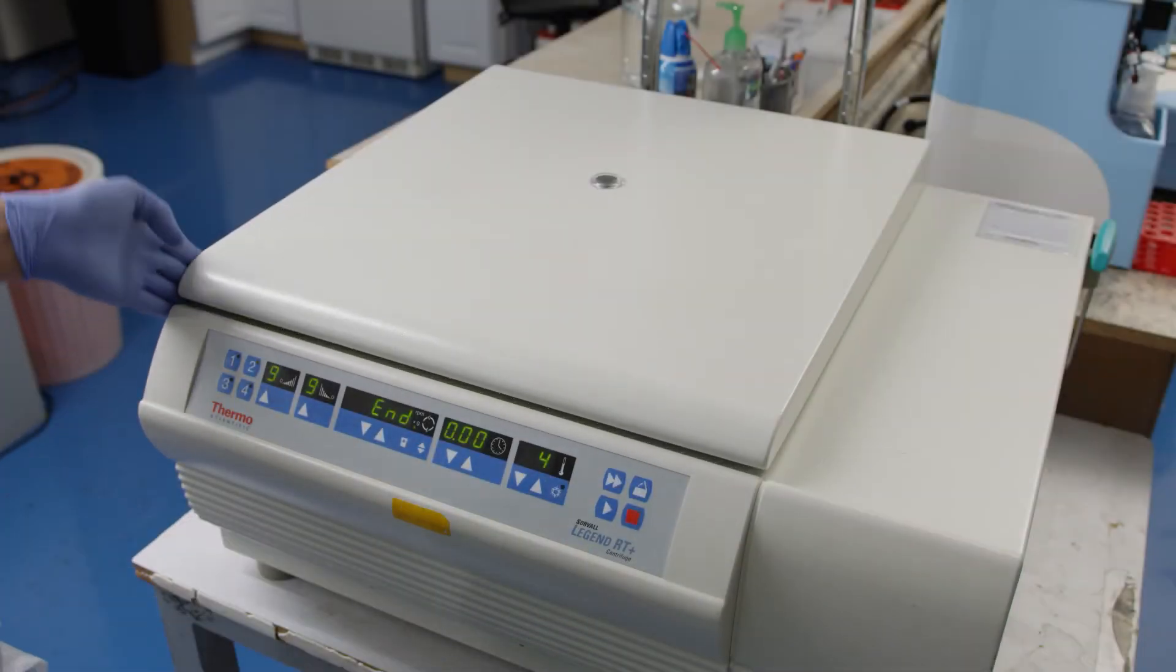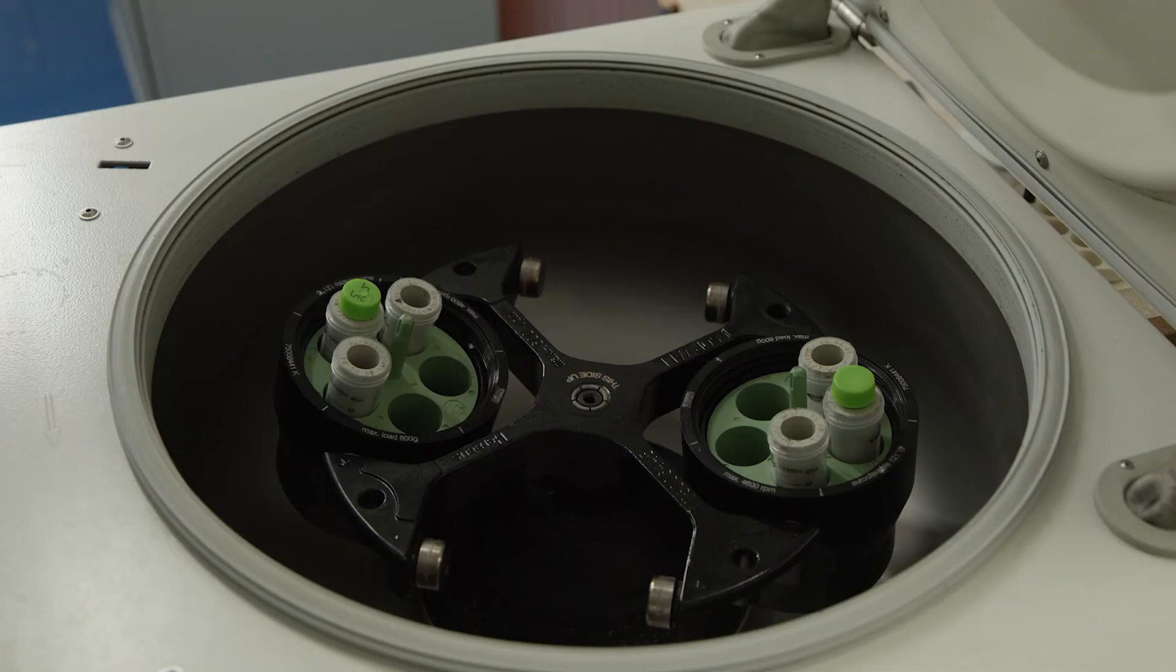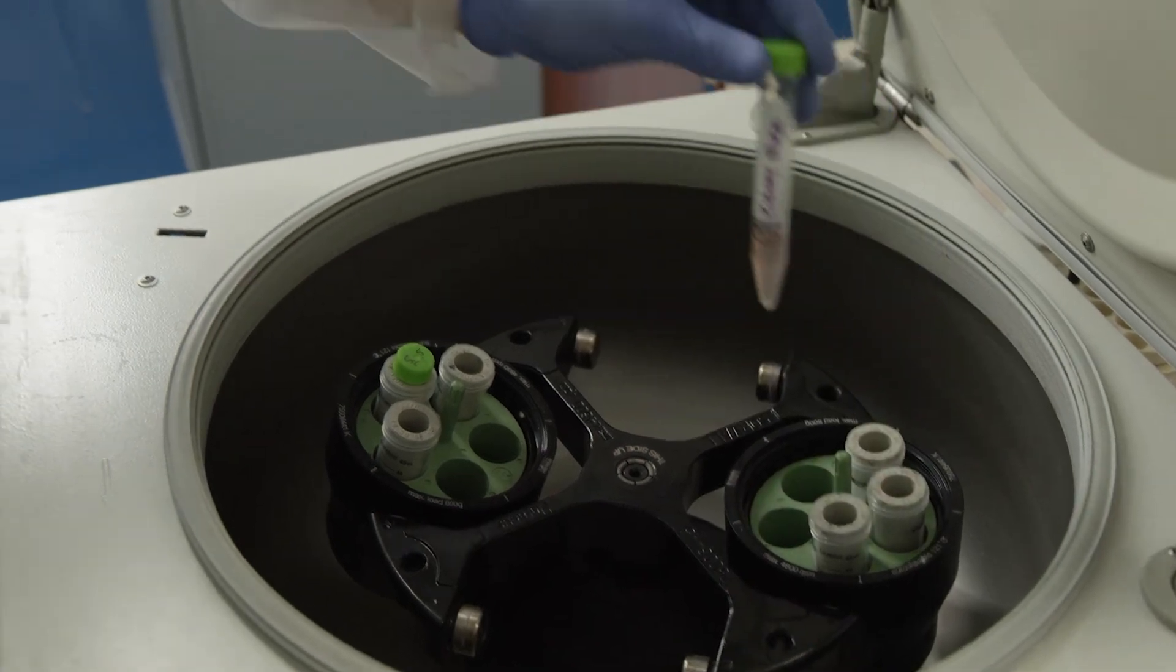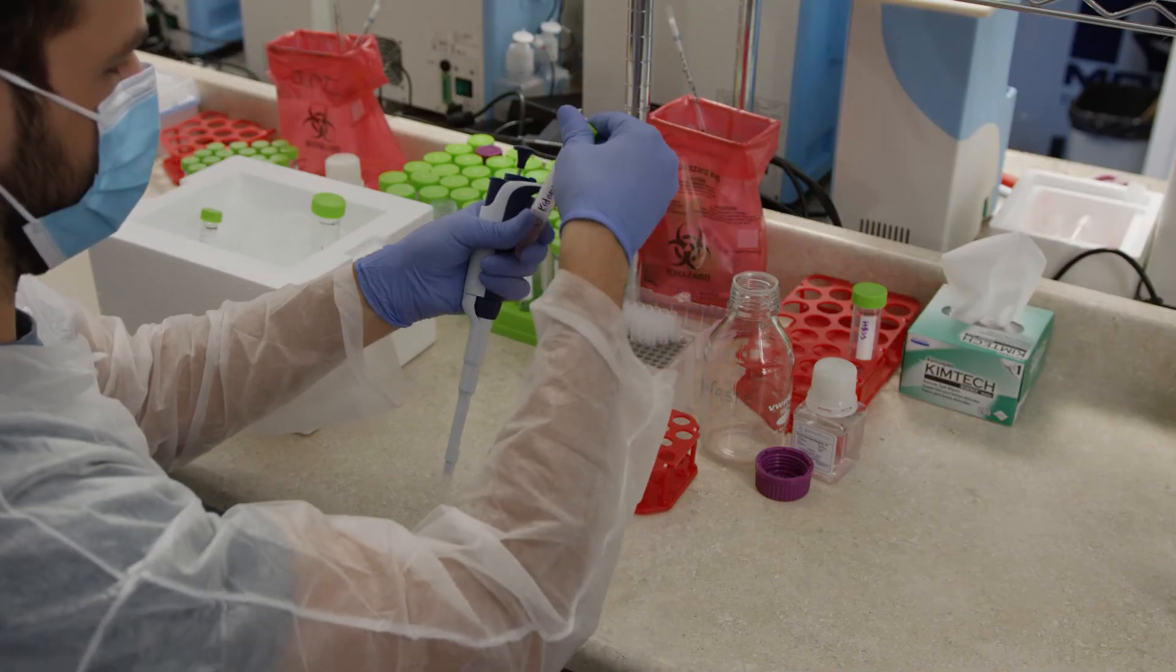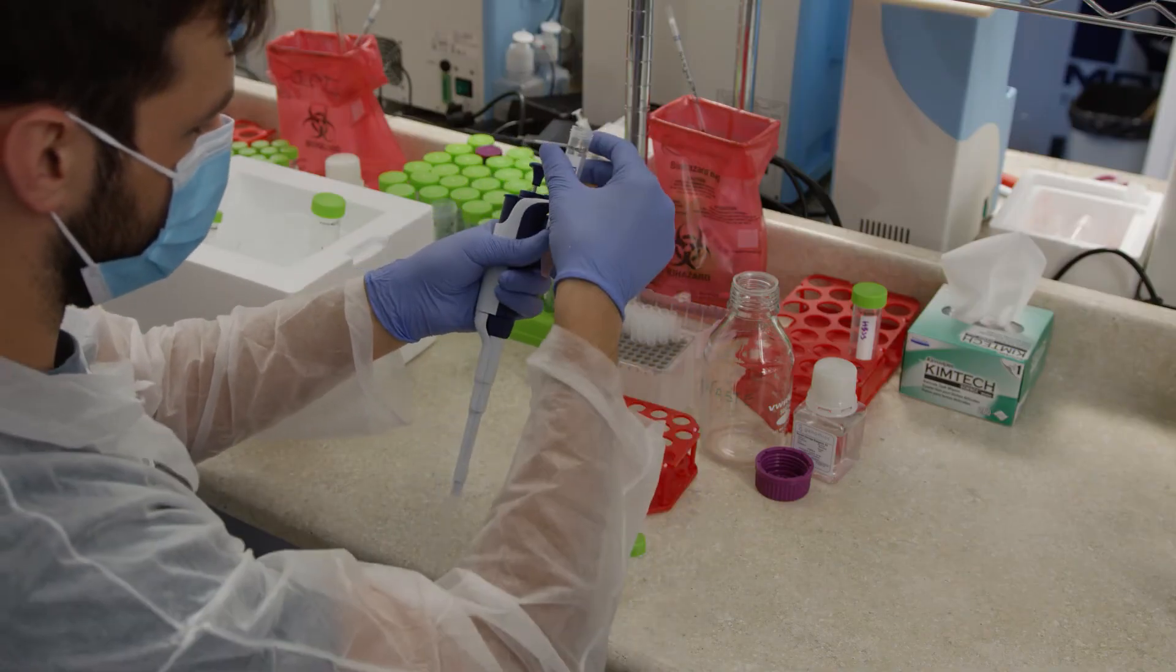After centrifugation, carefully remove the supernatant without disturbing your pellet. Add 1 milliliter of NSR or alternate buffer and gently resuspend the pellet.